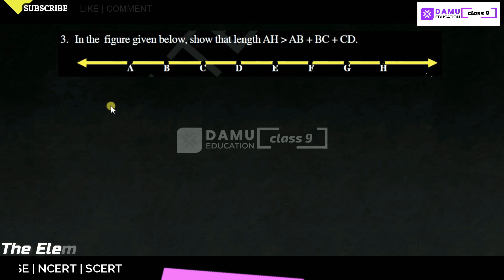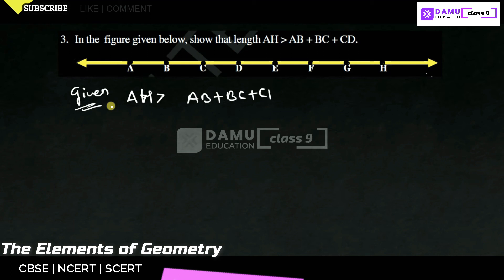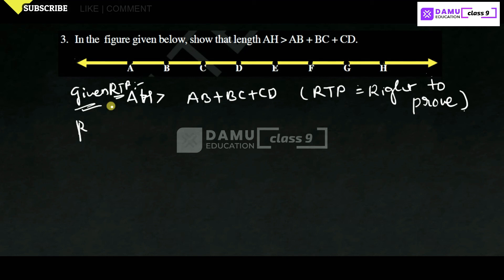Third question: from the given figure, show that AH is greater than AB plus BC plus CD. We are required to prove (RTP): AH is greater than AB plus BC plus CD.